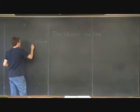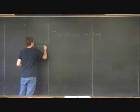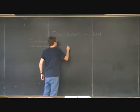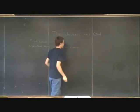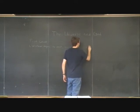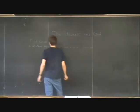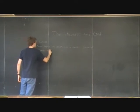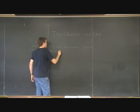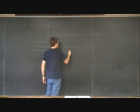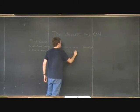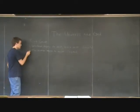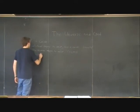And basically, the logic of this argument is pretty simple. Your first point would be whatever begins to exist has a cause. And the rationality behind this point would be causality. And then the second point would simply be the universe began to exist. And the rationality behind this point would be, of course, the Big Bang. And obviously, the conclusion you would draw, if both of these are true, would be the universe has a cause.